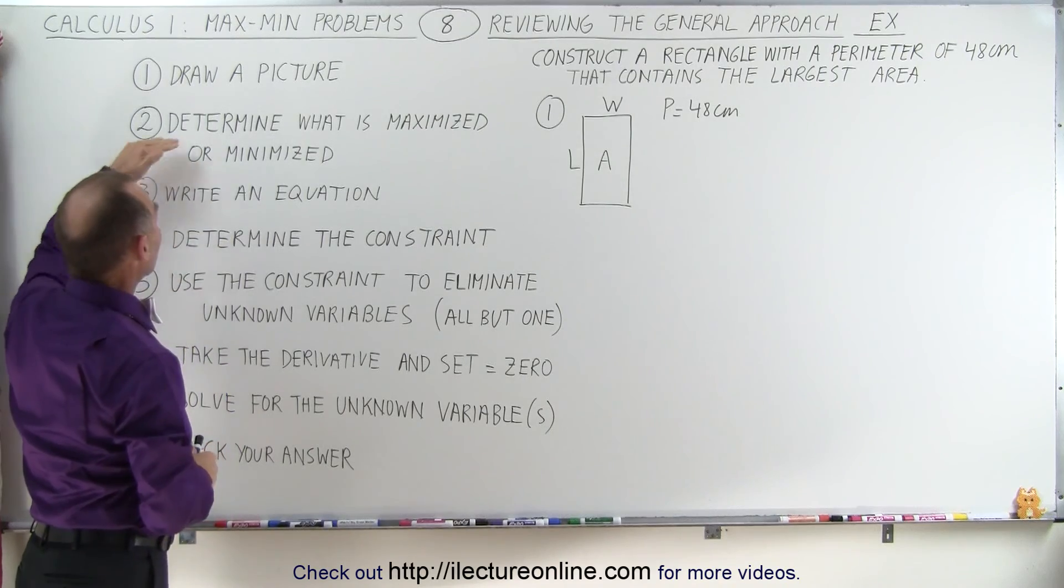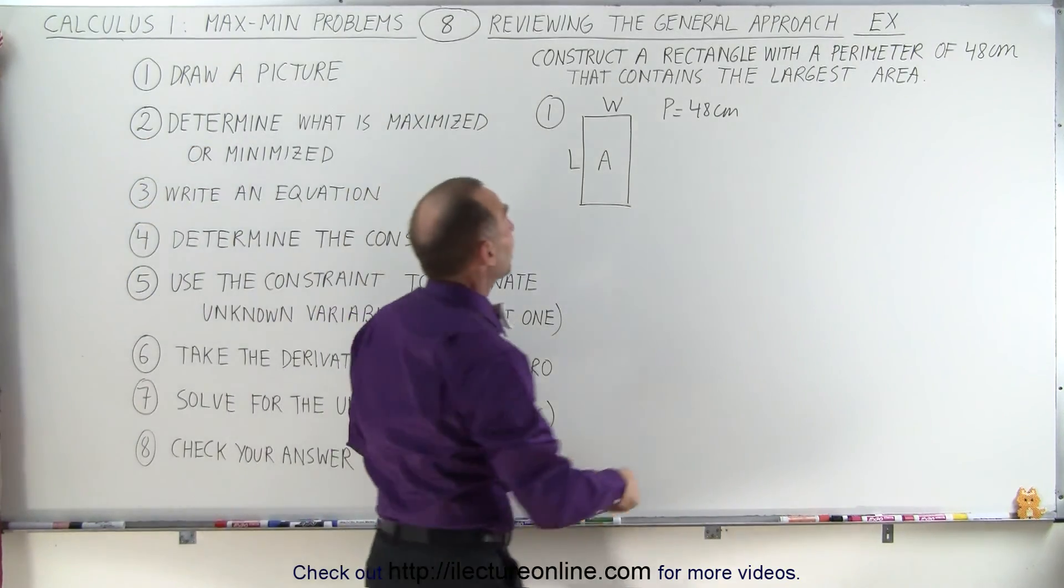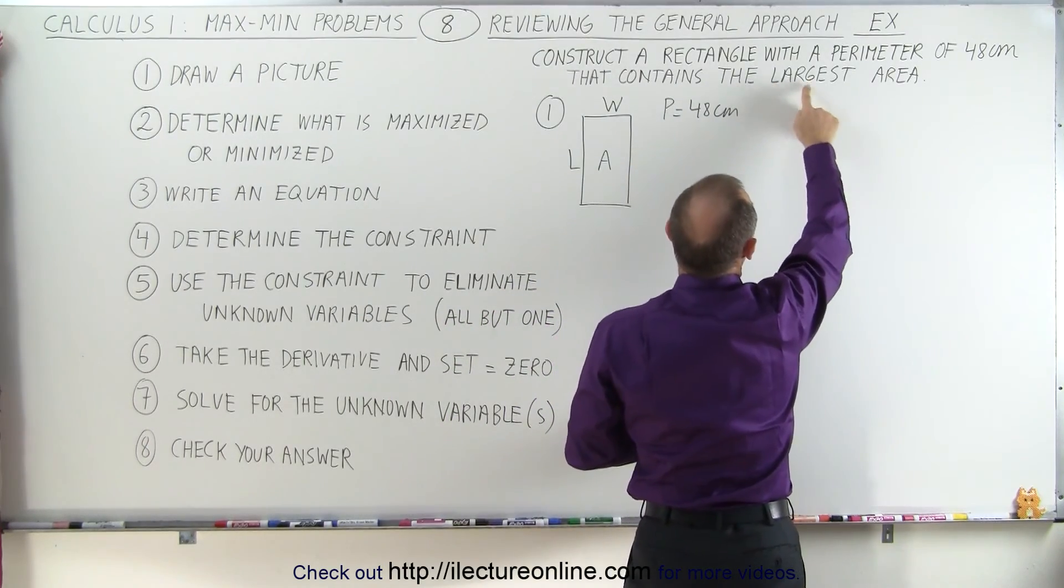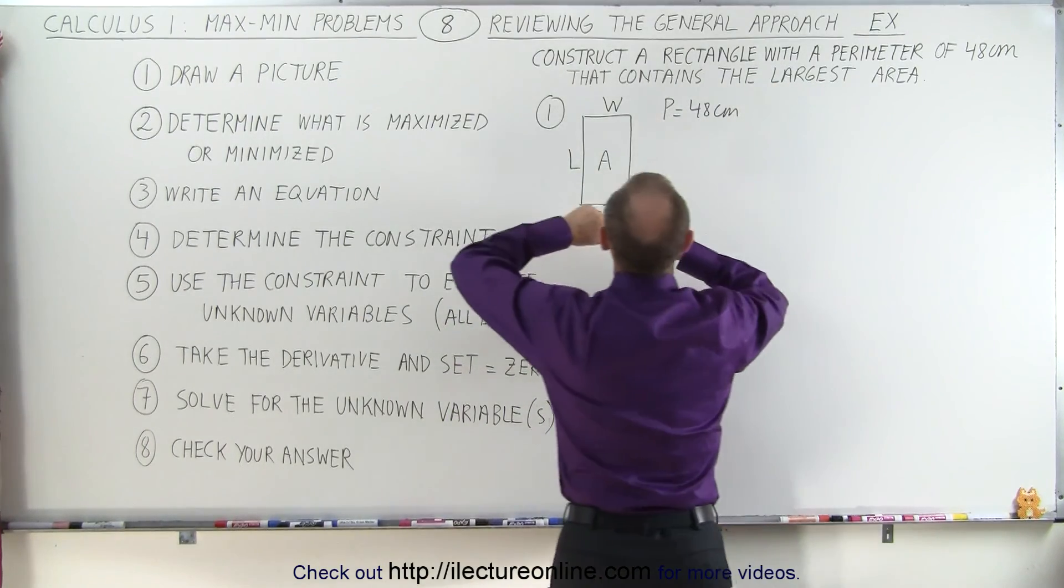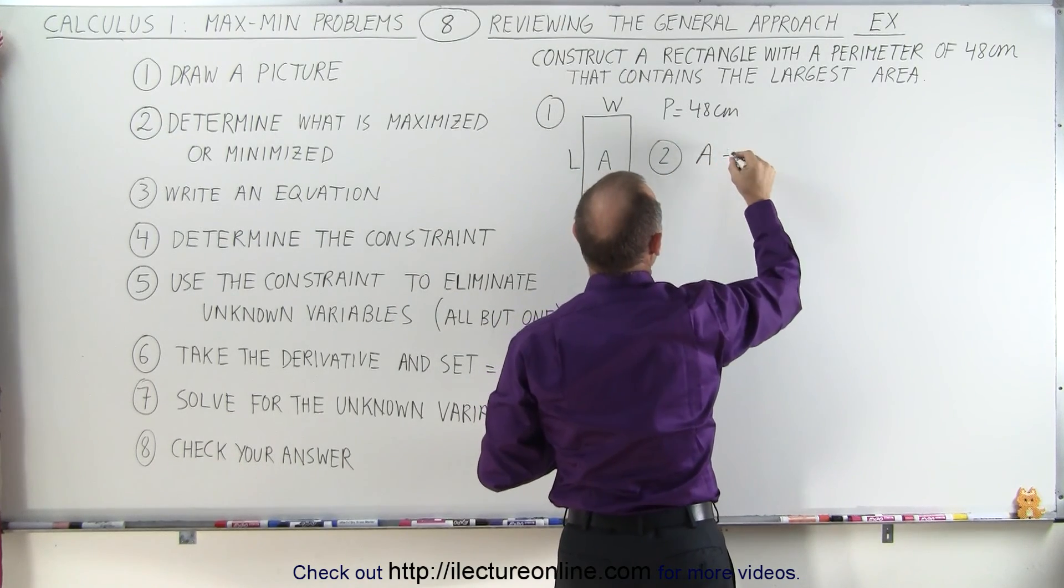Next we determine what is maximized or minimized. Now in this problem that's easy to determine. They tell us we want a rectangle that contains the largest area, which means for point number two, A is maximized.